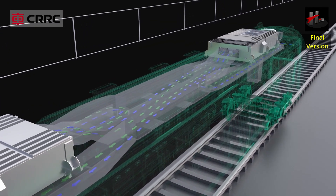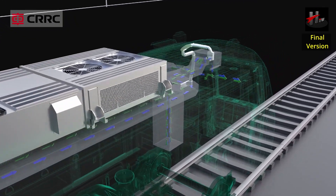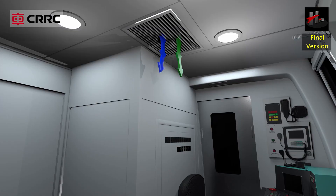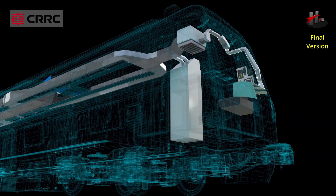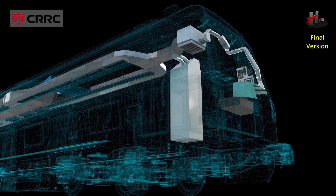This mixed air is also discharged into the driver's cabin through the cab booster fan. Additionally, the cool air is also discharged into the duct going into the driver's console and the CLEC cabinet.